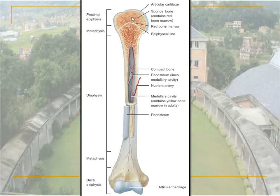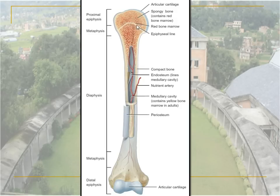The epiphysis is separated from the shaft of the long bone, which is also called the diaphysis. The epiphysis and diaphysis are separated with the help of a cartilaginous plate which is present here.